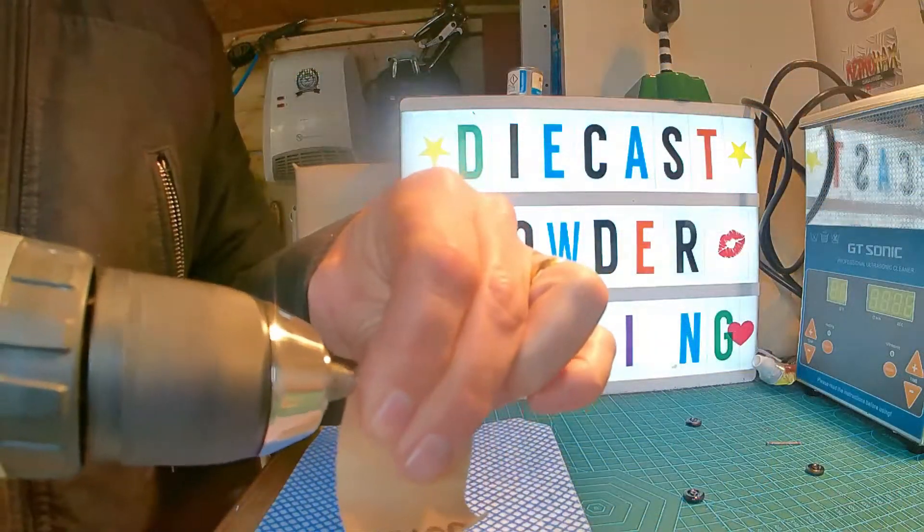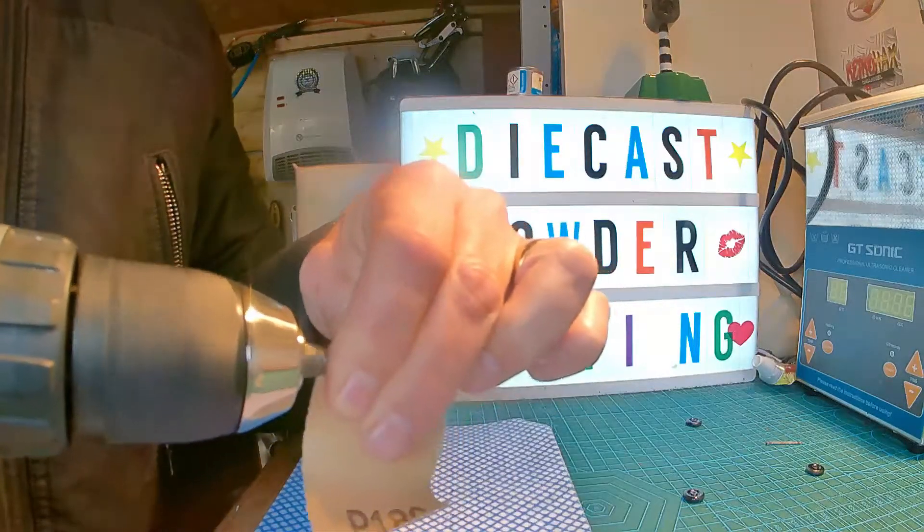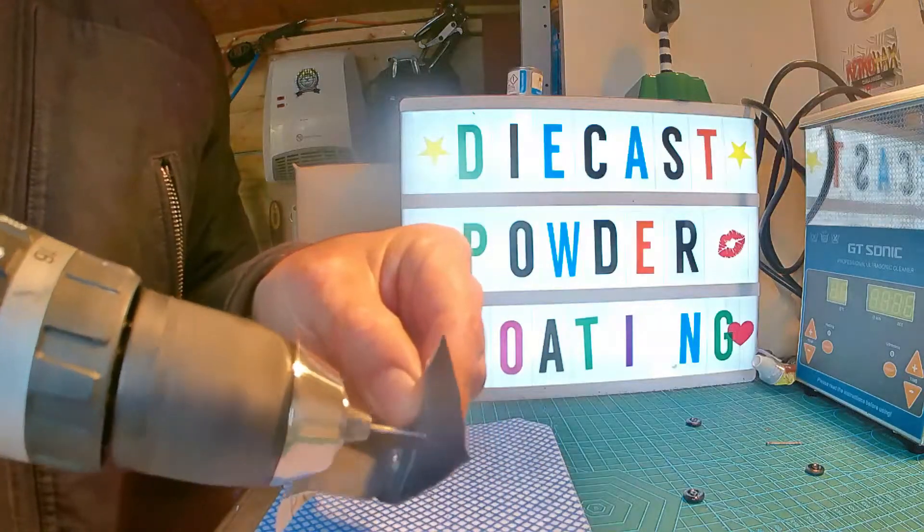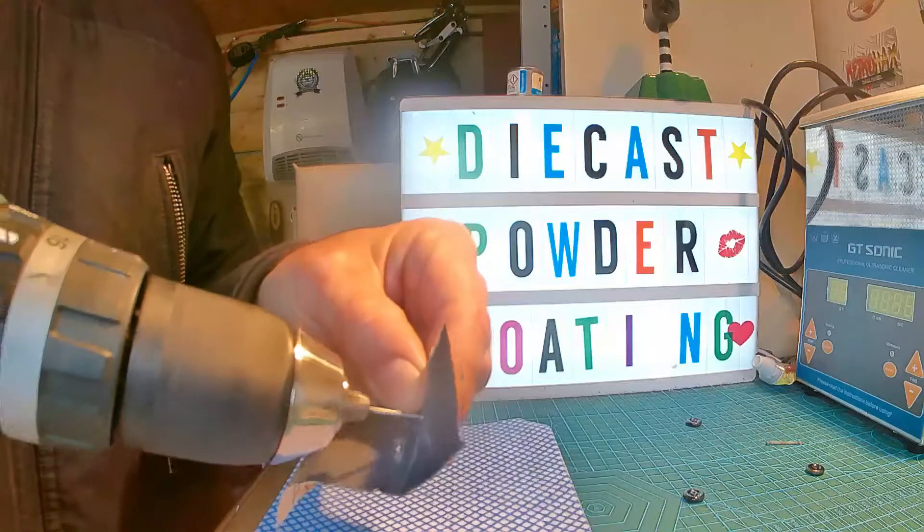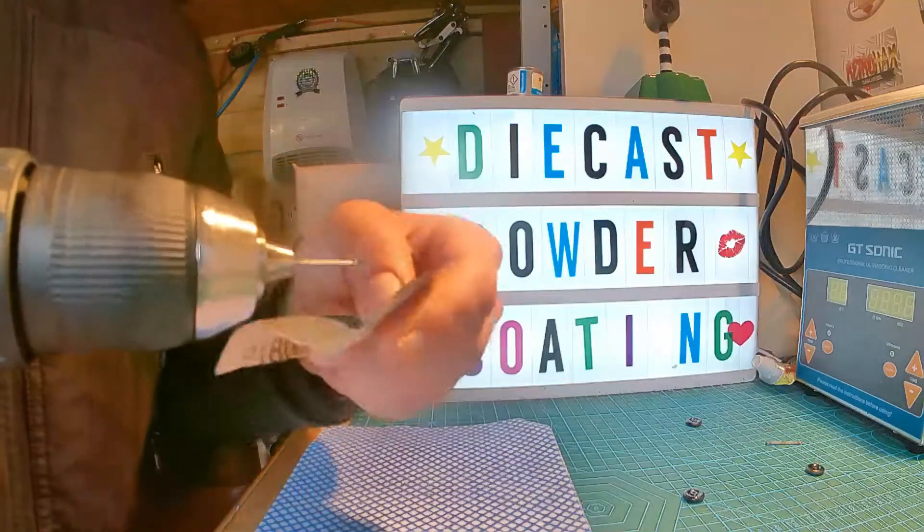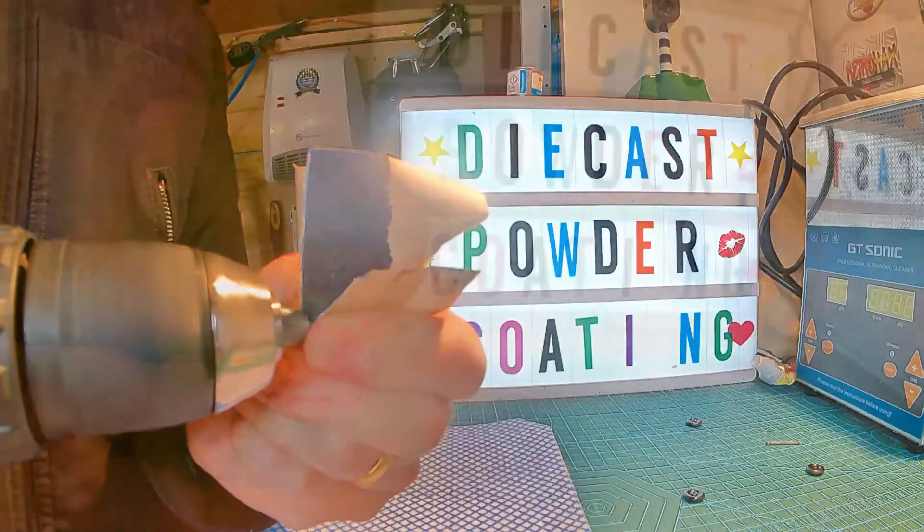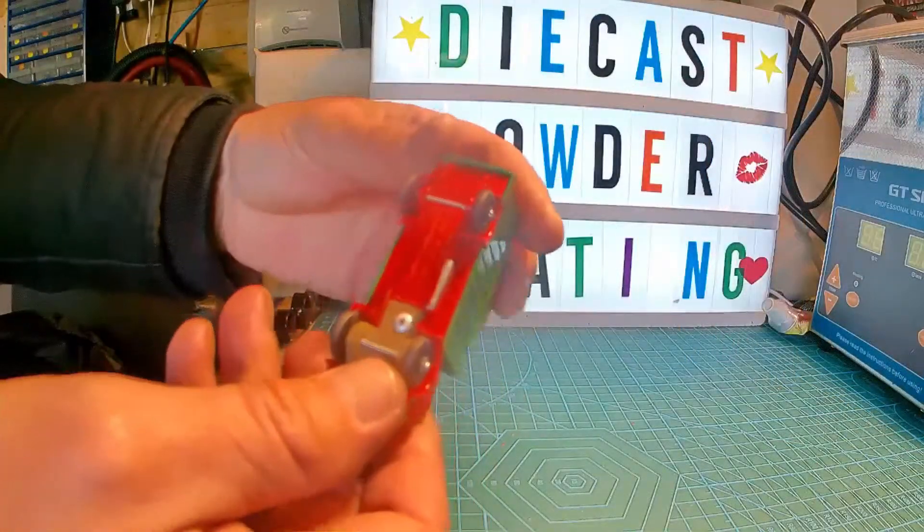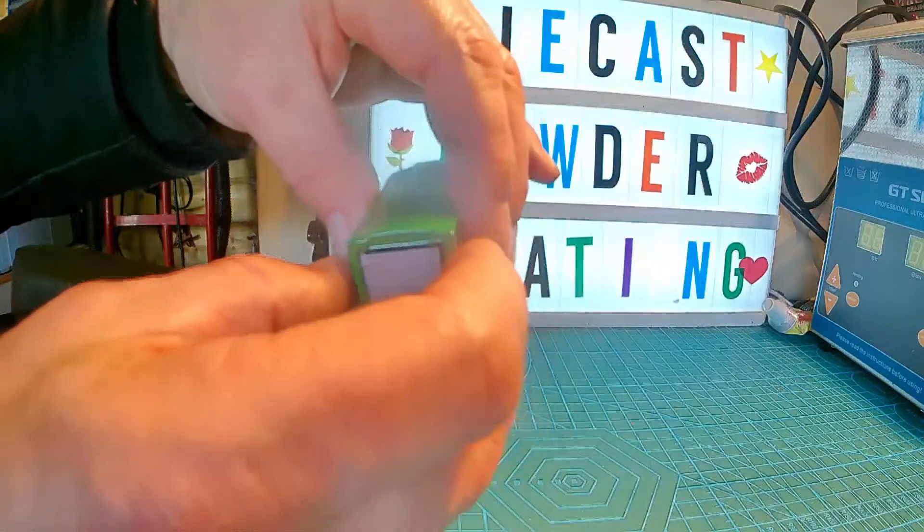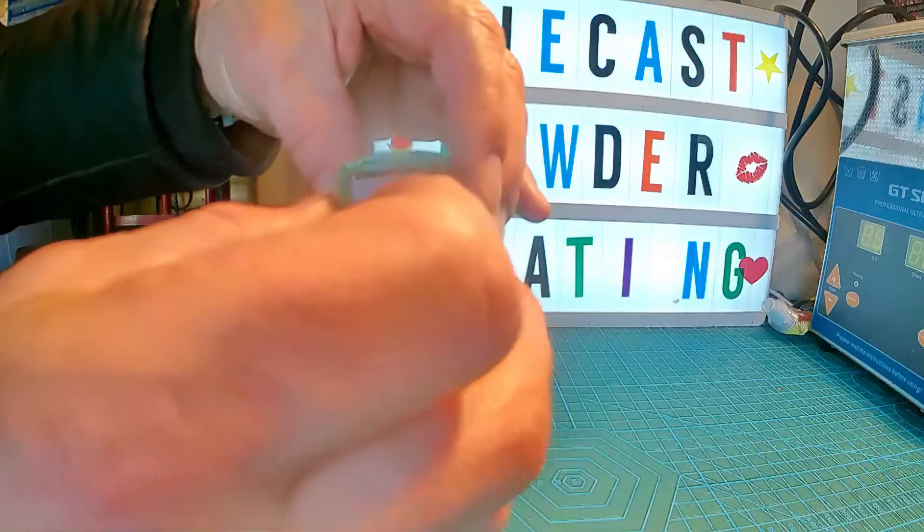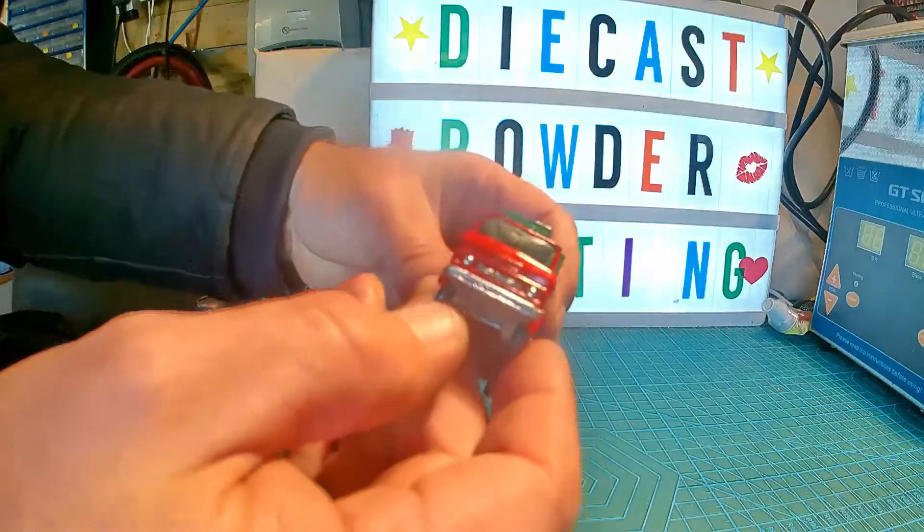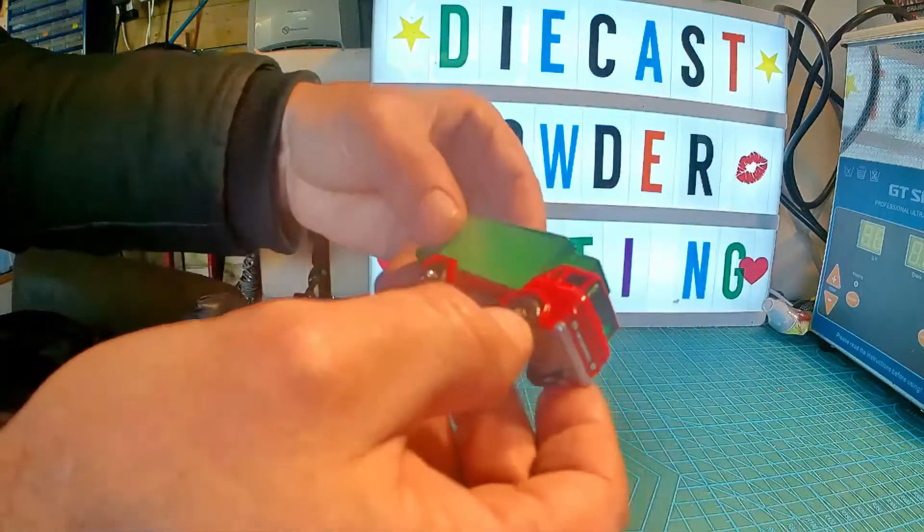And finally just using some emery paper just to polish up the axles a little bit using the drill. And with the wheels back on that's it, she's finished. And there's a little door now working and the glass in and the chrome has come through on the lights and the grill and also done the fuel tank.